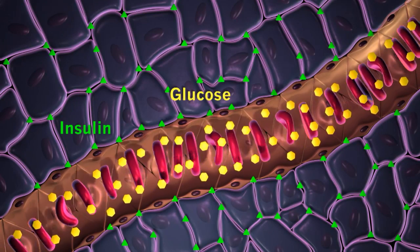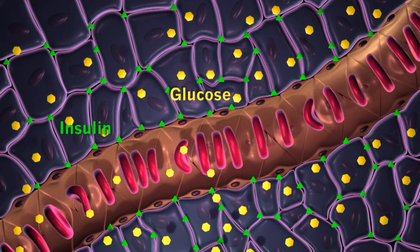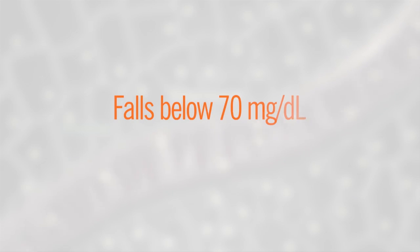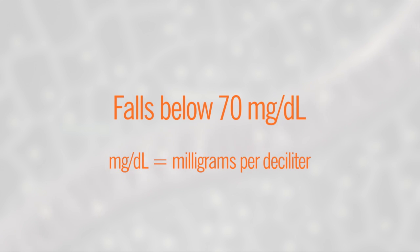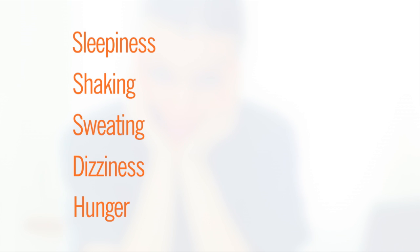The most common side effect of insulin is low blood sugar, or hypoglycemia. Low blood sugar happens when the level of sugar in the blood falls below 70 milligrams per deciliter. Symptoms include sleepiness, shaking, sweating, dizziness, and hunger. Be sure you know how to treat low blood sugar before you start using insulin.